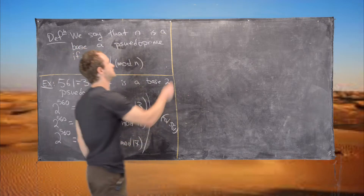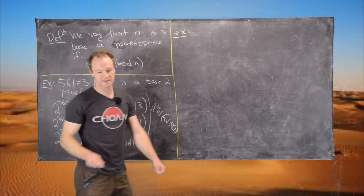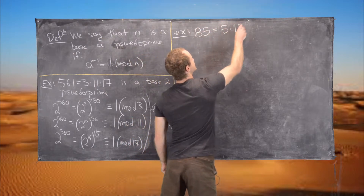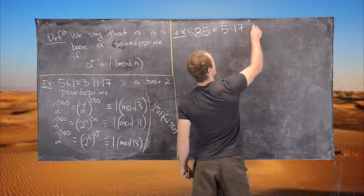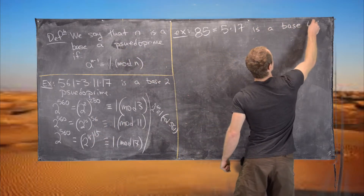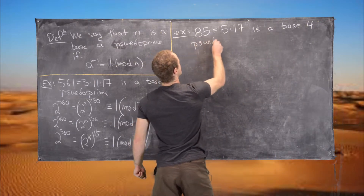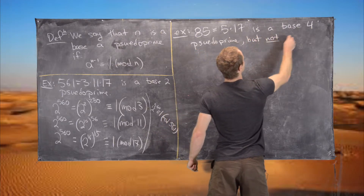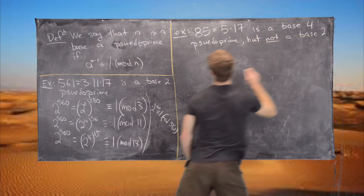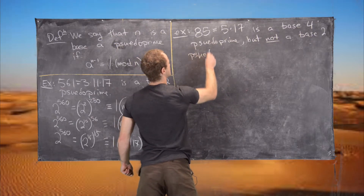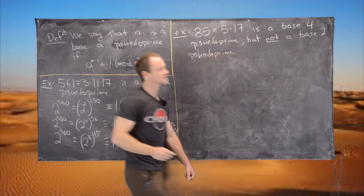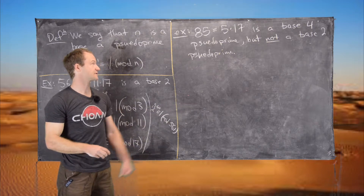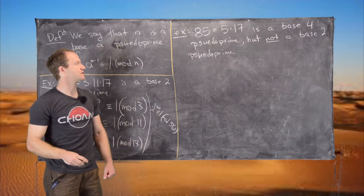Let's look at another example. 85, which equals 5 times 17, is a base-4 pseudoprime but not a base-2 pseudoprime. That's why it's a useful example.